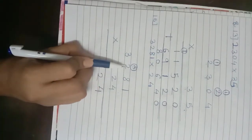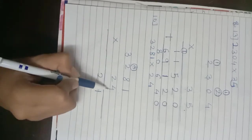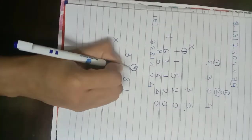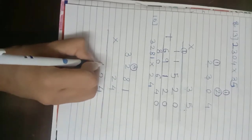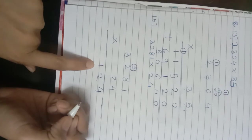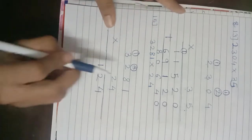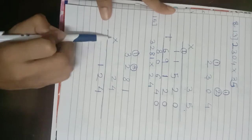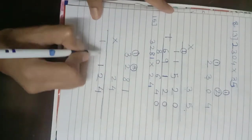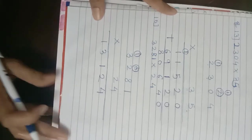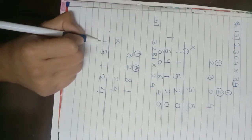Thousands place digit is 3: 3 multiplied by 4 is 12; 12 plus carry 1 is 13. So we write 3 under the thousands place column and 1 under the ten-thousands place column. This gives us the first partial product.